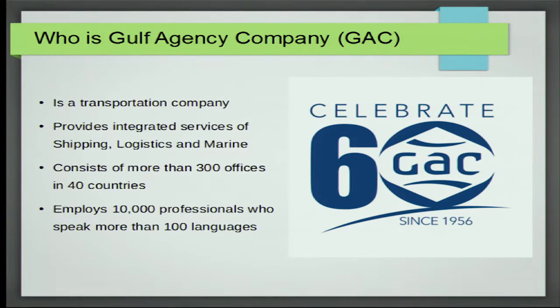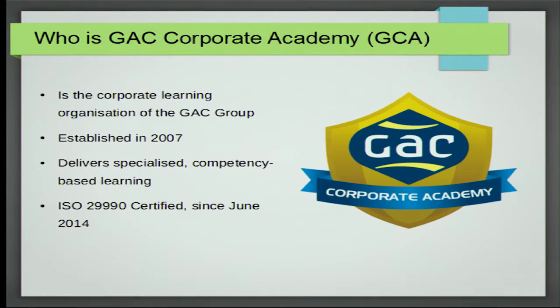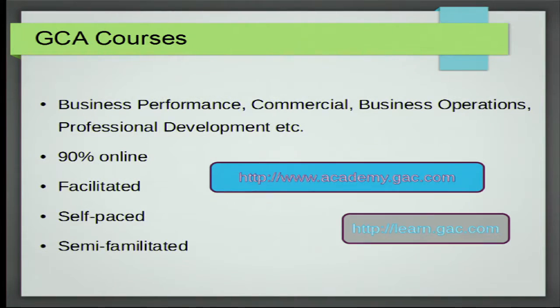Who is GAC? The Gulf Agency Company is a transportation company. It provides shipping, logistics, and marine services. It's a multinational company and it has created GAC Corporate Academy, the learning organization of the group. GCA has been established in 2007 and has been certified with ISO 29990 since 2014 — a standard for learning services for non-formal education and training. Our courses are 90% online through our Moodle site at learn.gac.com.